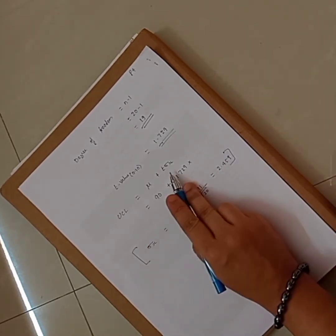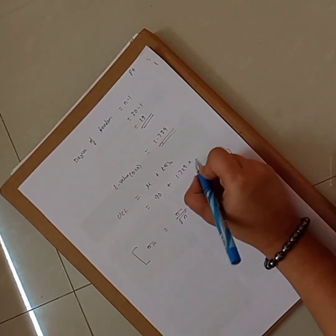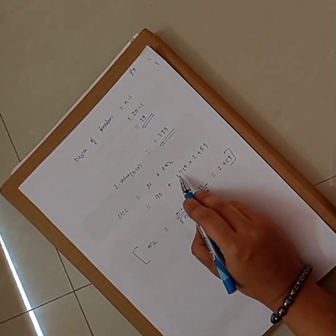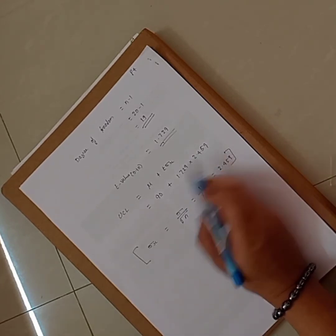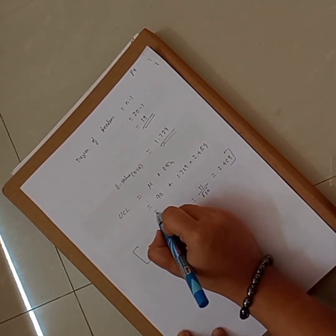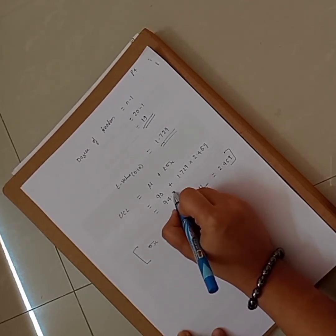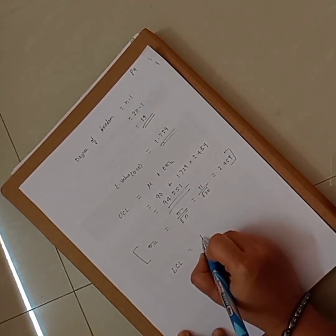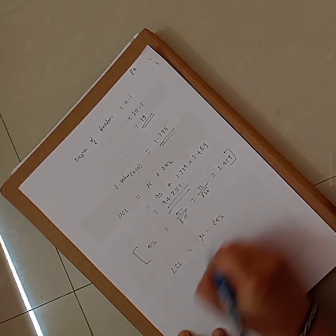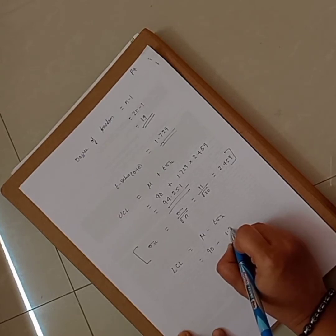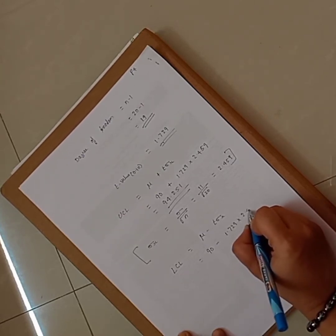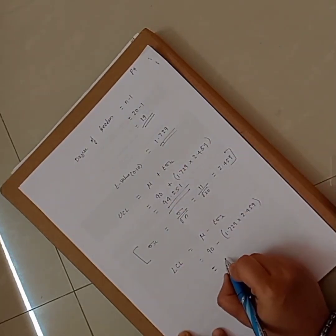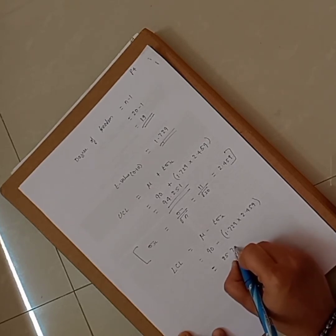Now we calculate UCL and LCL. UCL equals 90 plus 1.729 times 2.459, giving UCL equals 94.251. LCL equals 90 minus 1.729 times 2.459, giving LCL equals 85.749.